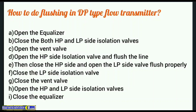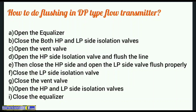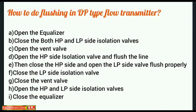How to do flushing in a DP type flow transmitter. A. Open the equalizer. B. Close both the high pressure and low pressure isolation valves. C. Open the vent valve. D. Open the high pressure side isolation valve and flush the line. E. Then close the high pressure side and open the low pressure side valve and flush properly. F. Close the low pressure side isolation valve. G. Close the vent valve. H. Open the high pressure and low pressure side isolation valves. I. Close the equalizer.